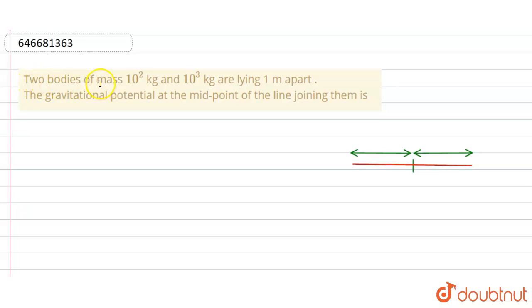Hello everyone. Two bodies of mass 10² kg and 10³ kg are lying 1 meter apart. The gravitational potential at the midpoint of the line joining them is... Now suppose there are two bodies of mass